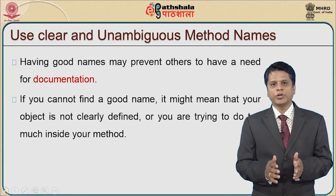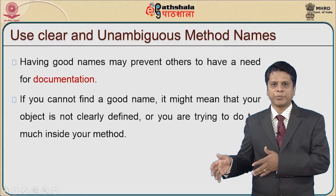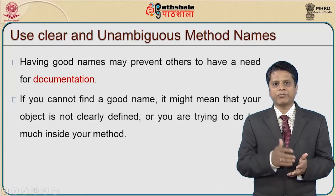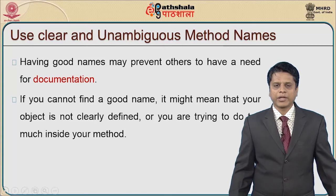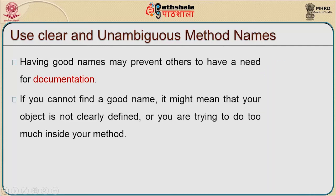Methods should be considered in the same way as files — produce good names that prevent others from needing excessive documentation. Rather than explaining what a program does in documentation, the name itself should convey the purpose. If you cannot find a good name, it might mean your object is not clearly defined or you are trying to do too much inside your method, making it unnecessarily complex.